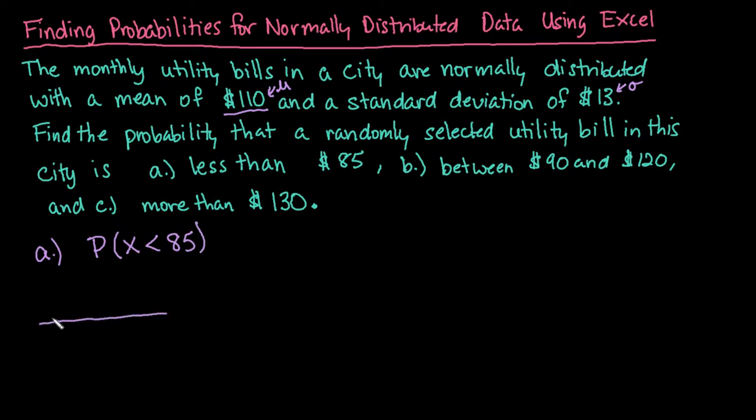With the normal curve, our curve is centered at 110 and we count by 13s for each standard deviation. 85 is down here somewhere and we're looking for values to the left of that. We know the answer won't be very large because 85 is pretty far from 110.